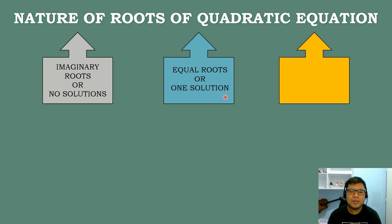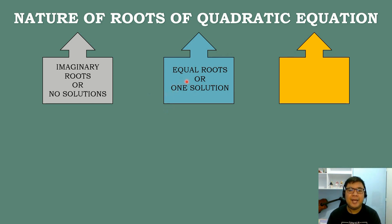The next one is called equal roots, or one solution. Here, the two roots have the same value — therefore they are equal with each other, and we have only one solution for that quadratic equation.